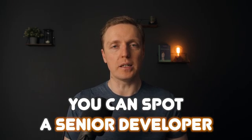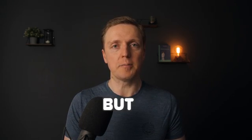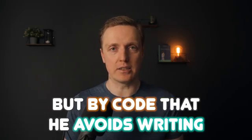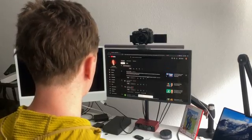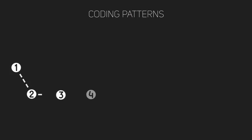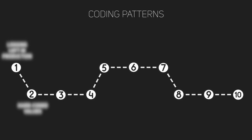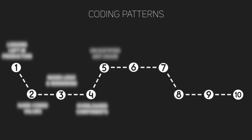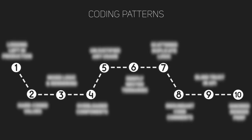You can spot a senior developer not just by the code that he is writing, but by the code that he avoids writing. In the last 15 years, I reviewed hundreds of different code bases, and I noticed 10 different coding patterns which separate junior from senior. By the end of this video, you will see real examples of what you should never write in your code if you want to be successful.